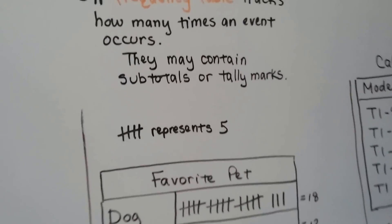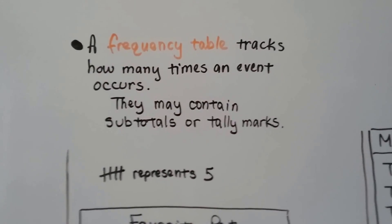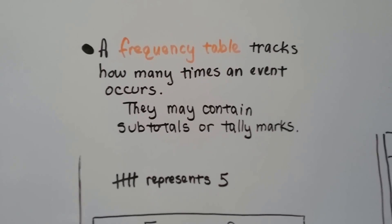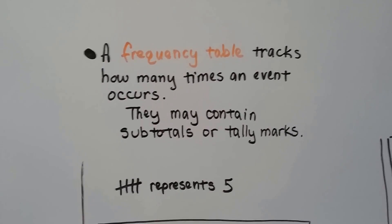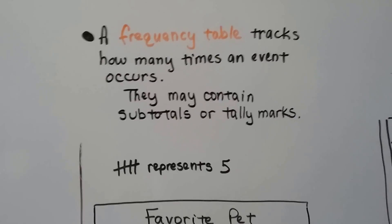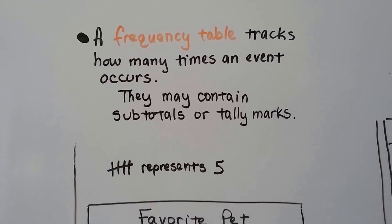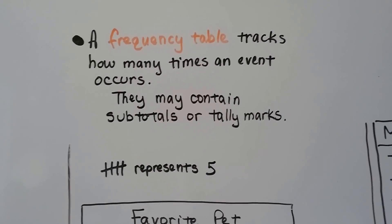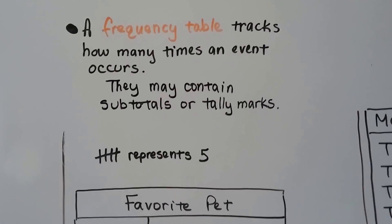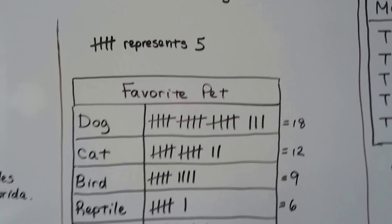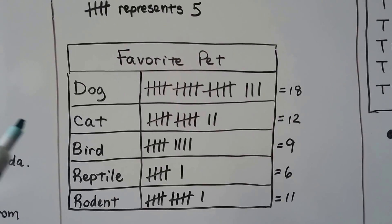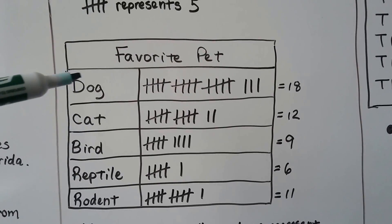A frequency table tracks how many times an event occurs. And they may contain subtotals of numbers or tally marks. And when you see the four tally marks with the one crossing it, just remember that's a five. It represents a five and we can count them very quickly just by counting by fives, can't we?